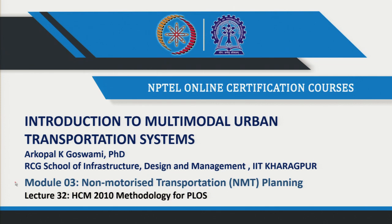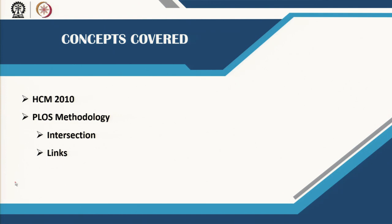Welcome back. In today's lecture we are going to give you an understanding of how to develop pedestrian level of service for the various links and intersections along an urban street. We are going to look at an urban street, look at what are the functional elements in the street, and then give you an idea about how to develop a pedestrian level of service for the intersection and the links. This is based on the Highway Capacity Manual 2010 version developed in the United States.